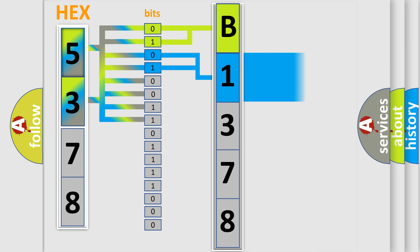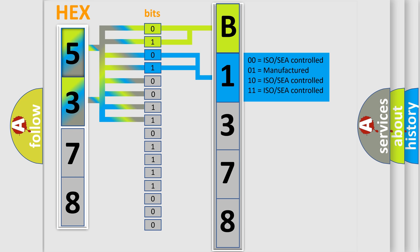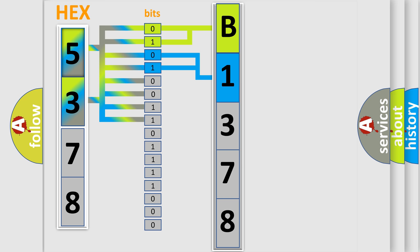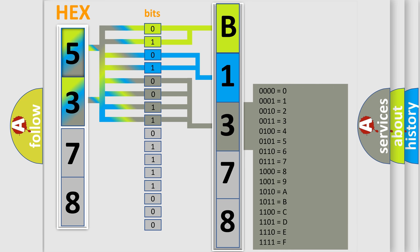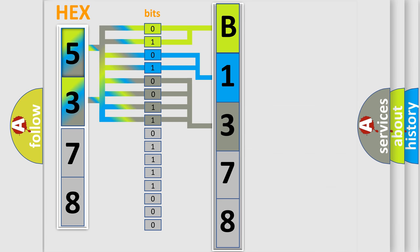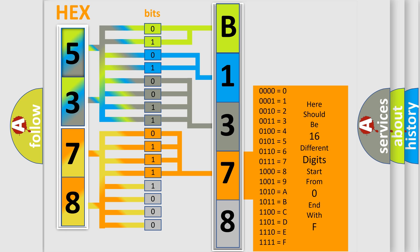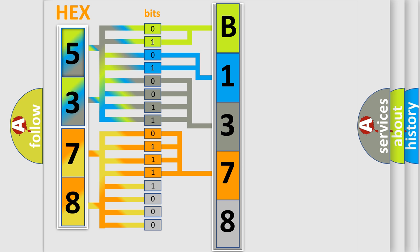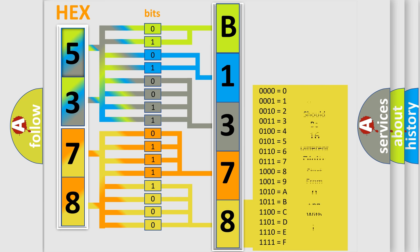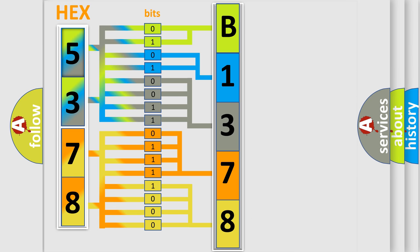The next two bits determine the second character. The last bits of the first byte define the third character of the code. The second byte is composed of a combination of eight bits. The first four bits determine the fourth character of the code, and the combination of the last four bits defines the fifth character. A single byte conceals 256 possible combinations. We now know in what way the diagnostic tool translates the received information into a more comprehensible format.